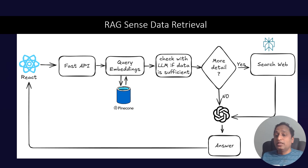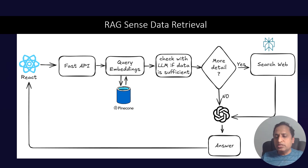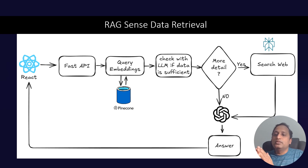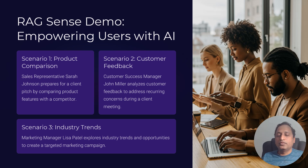On the retrieval side, a React-based application invokes the FastAPI, which queries the embeddings in Pinecone. Once the data is retrieved, we check with the LLM whether it is sufficient. If not, the LLM returns a search query, we search the web using Perplexity, pass both sets of information to the LLM, and it answers the question. This is agentic RAG in action — augmenting data from both internal and external sources before sending it to the LLM.